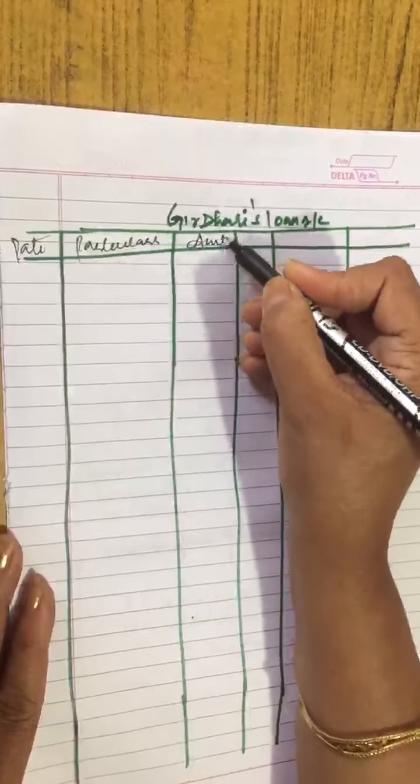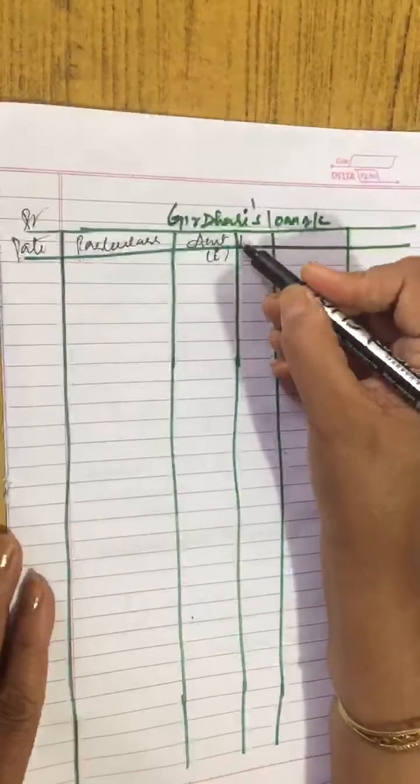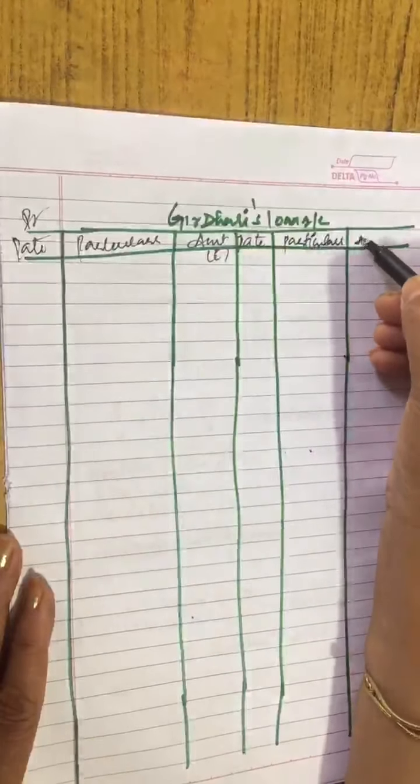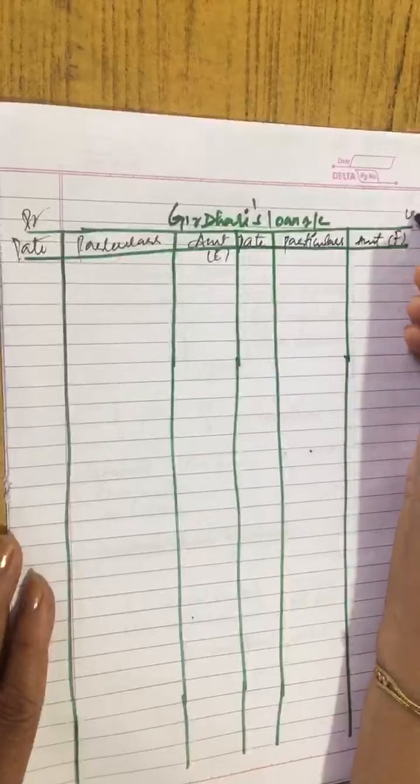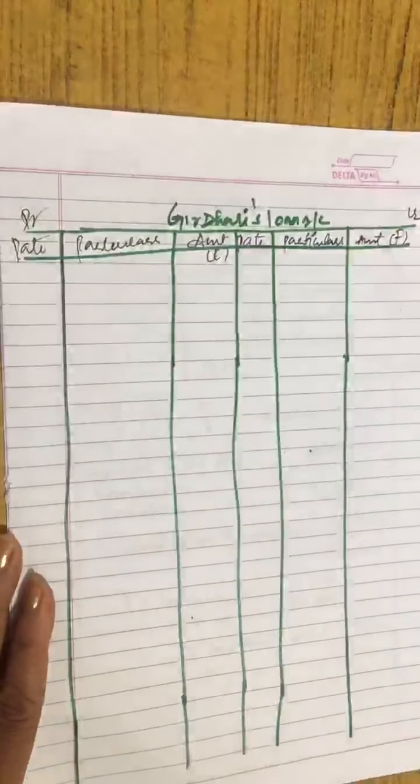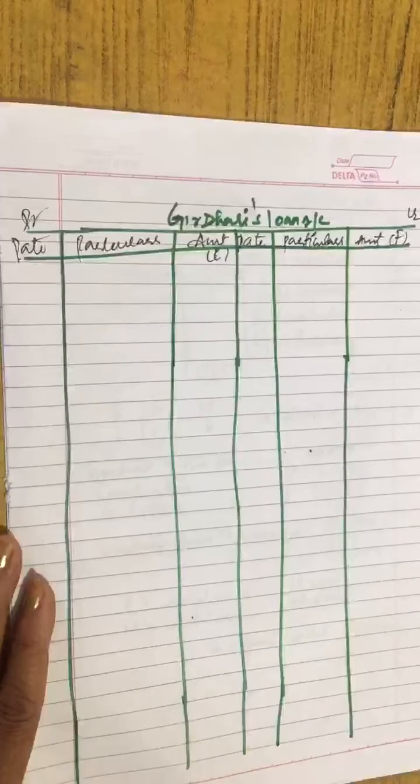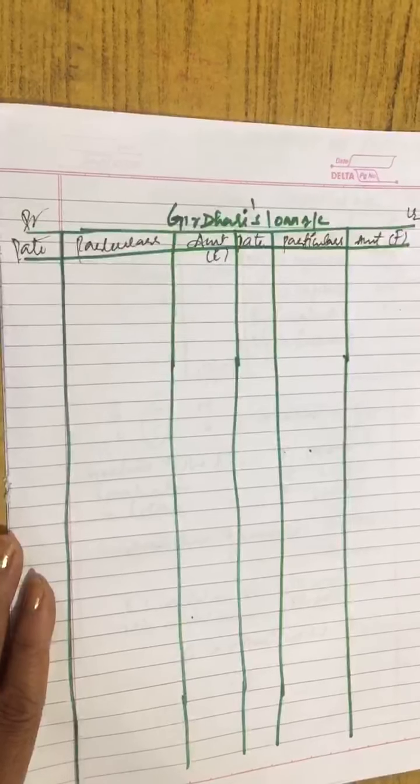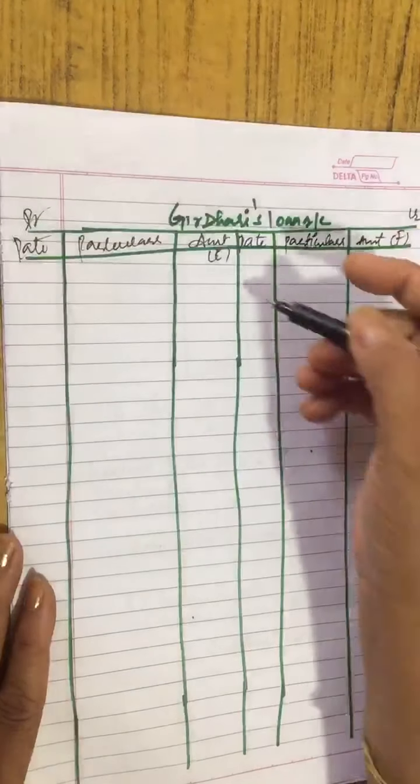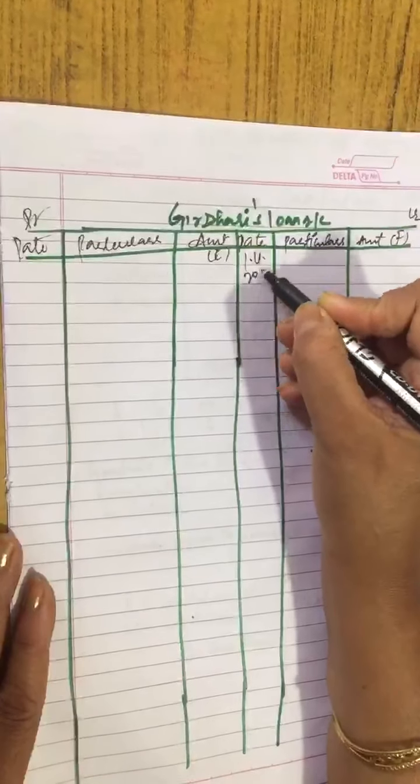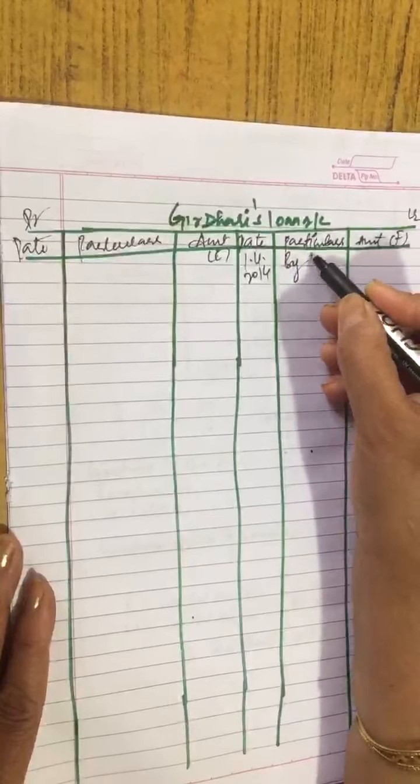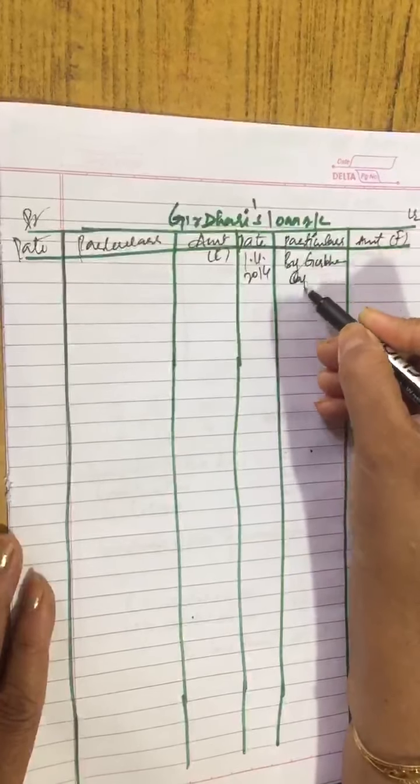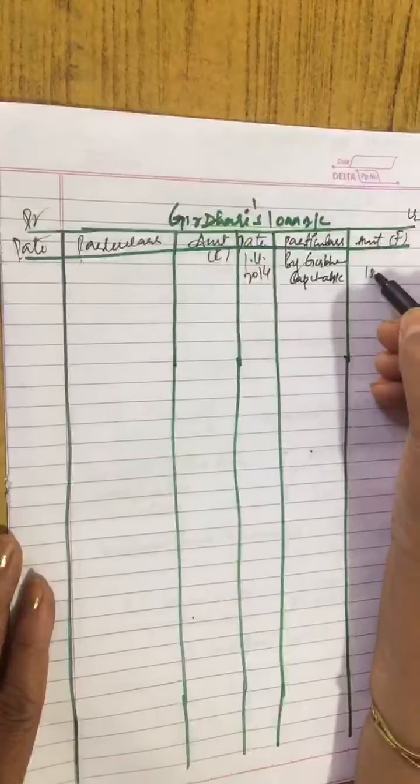This is the format we have made. Same you will follow: date, particulars, amount. This is debit side. Date, particulars and amount, this is credit side. On which day Girdhari is retiring? 31st March 2014. So this means we transfer this balance on 1st April 2014. By Girdhari's capital account we have brought his balance that is rupees 1,50,000.